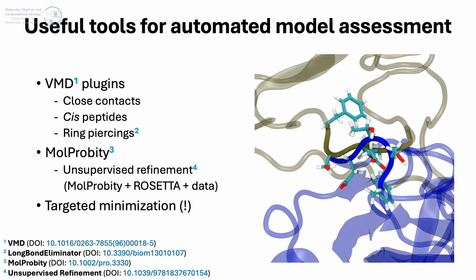There are many tools to perform structural checks. VMD has useful plugins: the measure contacts command detects close atomic contacts between two atom selections. Close contacts may be minor issues a minimizer will easily address, or may indicate severe structural clashes like major residue overlaps. Always check for close contacts and investigate them visually. VMD's cis-peptide plugin can detect peptide bonds in cis configuration rather than trans. Although cis peptides do occur naturally — usually involving a proline — they can arise from fitting atomic models to low-resolution data or minimizing structures with bad geometries. Always check and correct them if appropriate.